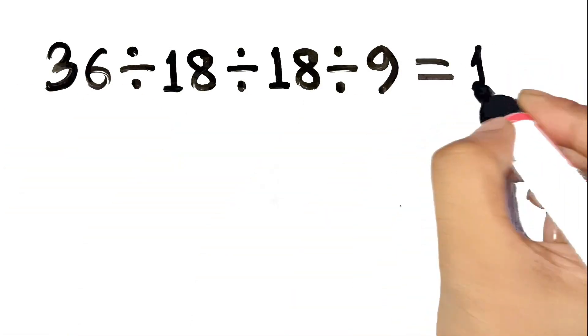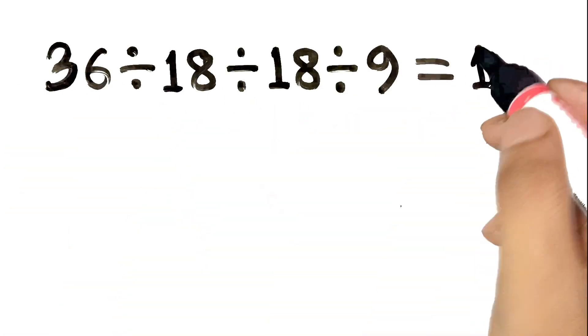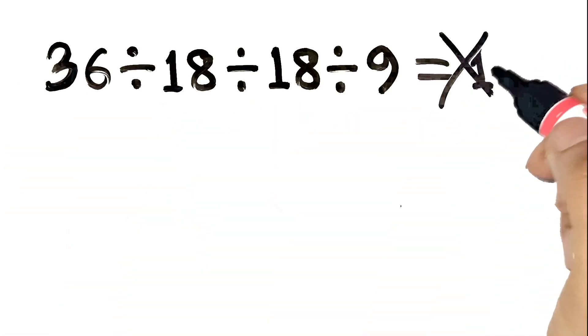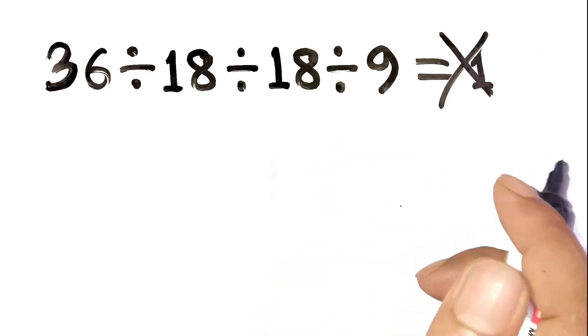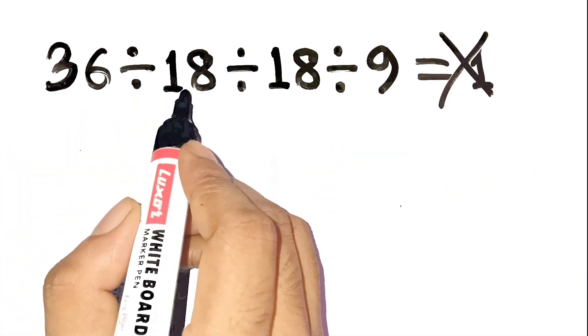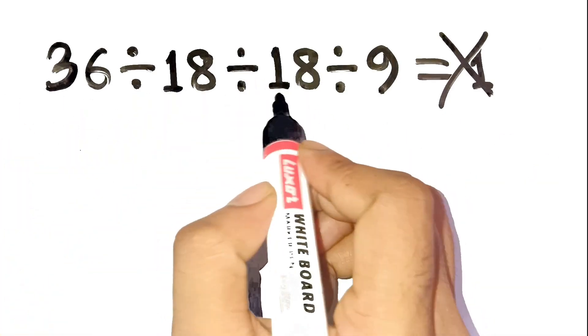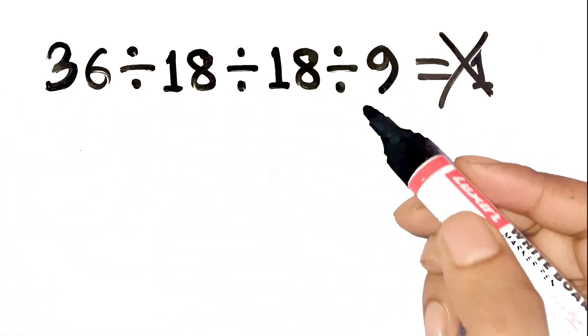Chances are you said 1, and that's exactly why most people get this wrong. All right, here's the problem: 36 divided by 18, divided by 18, divided by 9.